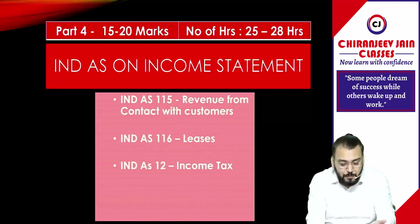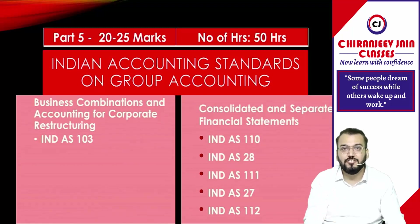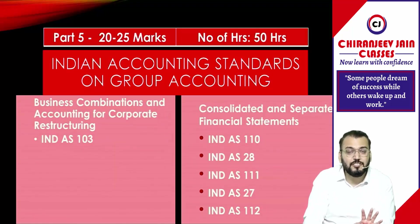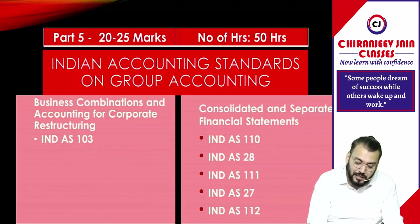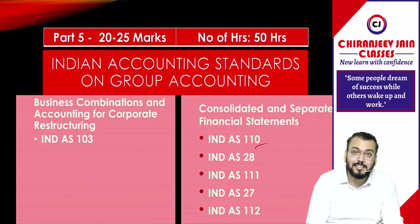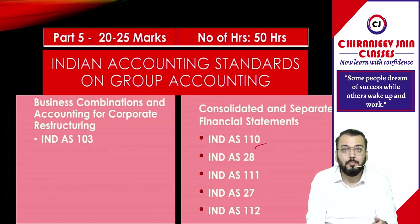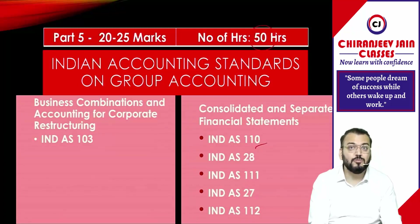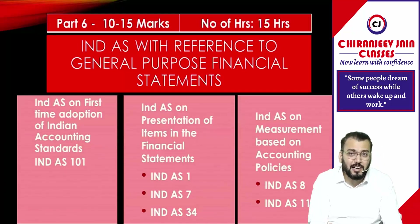After completion of Part 4, move to Part 5: group accounting — consolidation and business combination chapters. Part 5 consists of business combination (Ind AS 103) and consolidation chapters including Ind AS 110, Ind AS 28, Ind AS 111, and Ind AS 27. The weightage from these chapters is 20 to 25 marks, and I have allocated the maximum — 50 hours — for these two chapters.